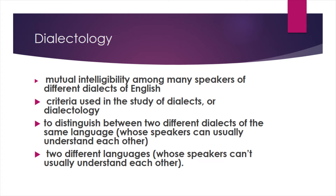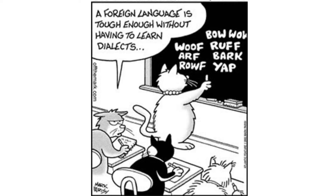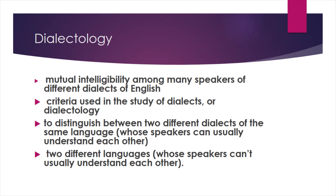Despite occasional difficulties, there is a general impression of mutual intelligibility among many speakers of different dialects of English. This is one of the criteria used in the study of dialects, or dialectology, to distinguish between two different dialects of the same language whose speakers can usually understand each other, and two different languages whose speakers usually cannot understand each other.